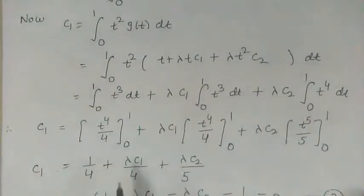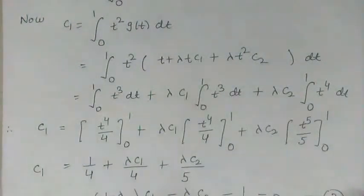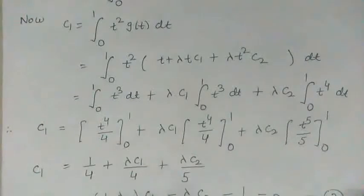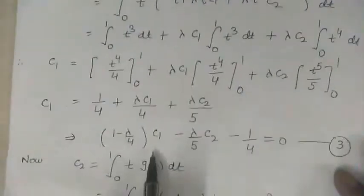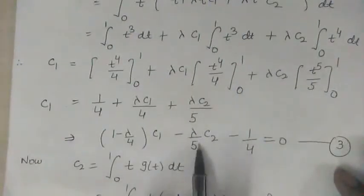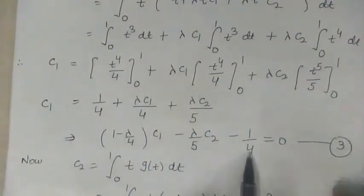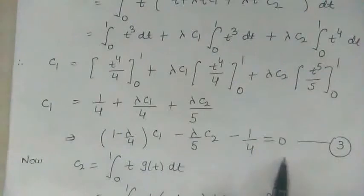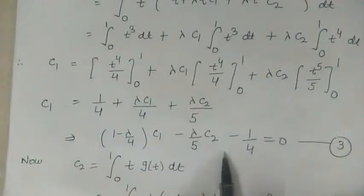Shifting all terms to the left-hand side, we obtain the first equation: (1 − λ/4)c₁ − (λ/5)c₂ − 1/4 = 0. This is equation 3.